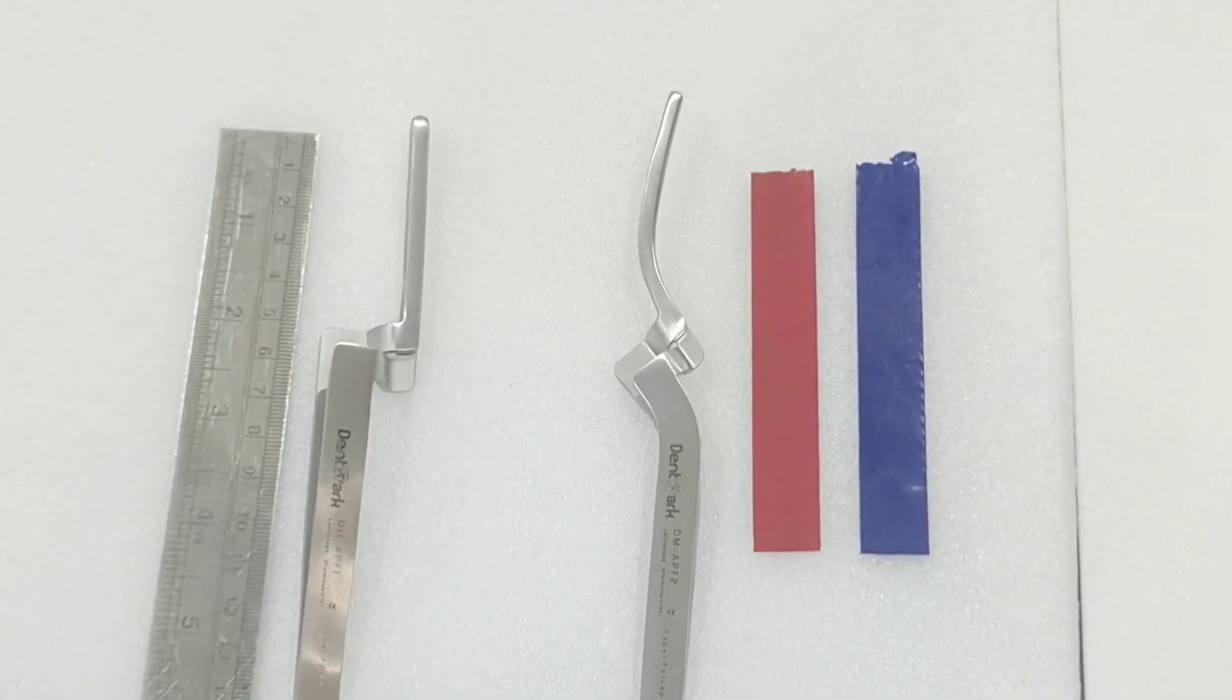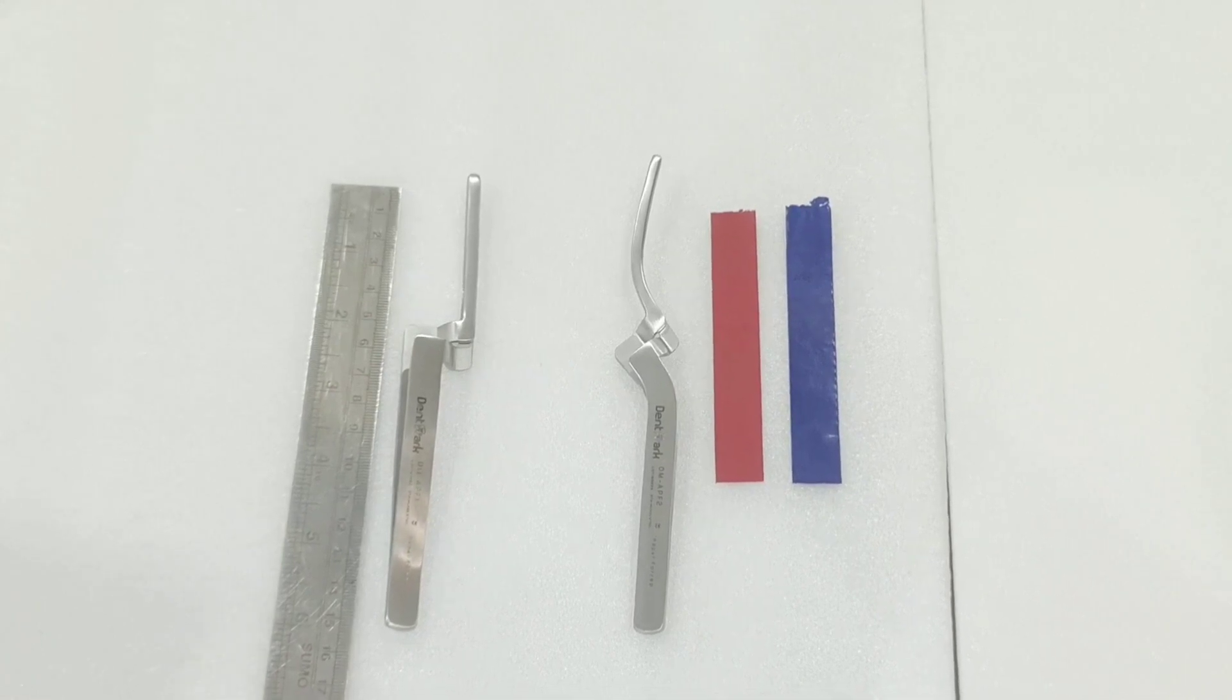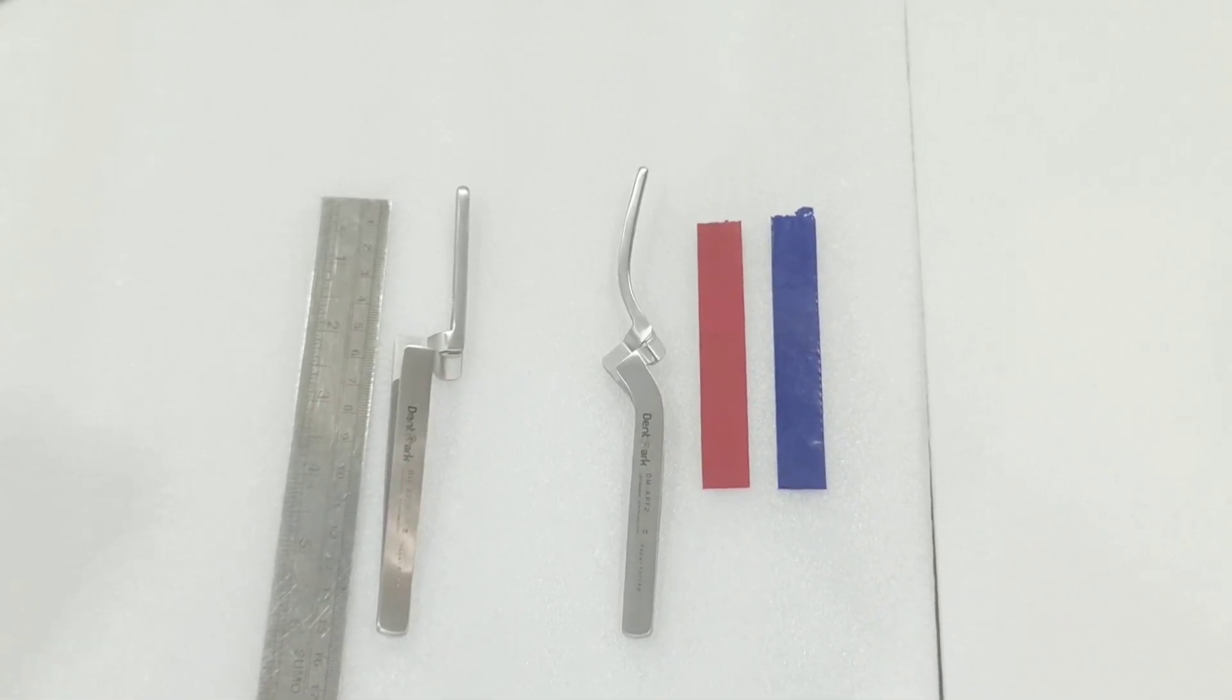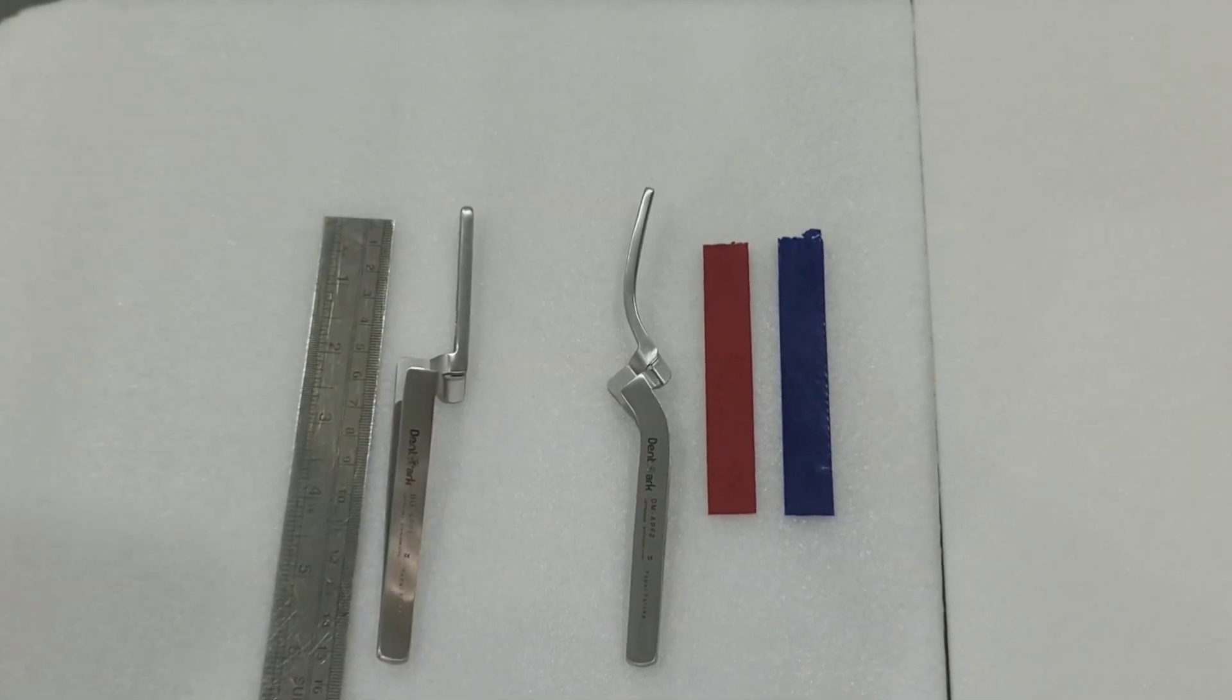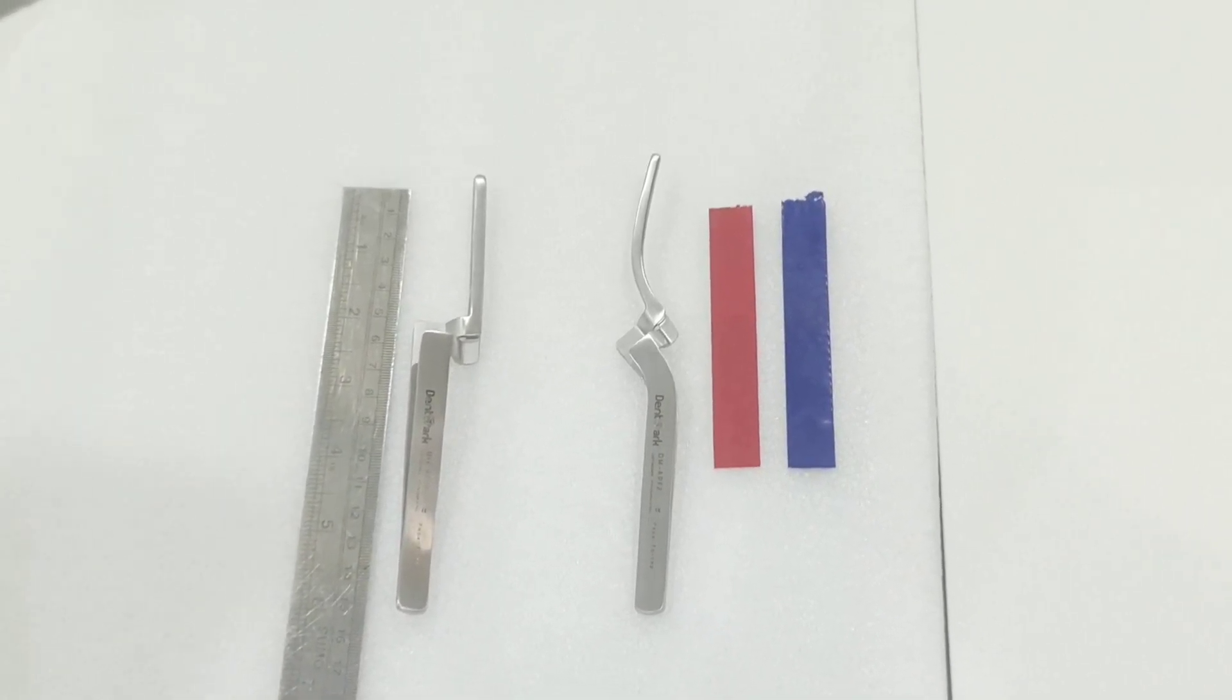This is another video from Denmark High Quality Dental Instruments. This is an articulating paper holder or forceps, used for checking occlusion of dental restoration and teeth. Holding the paper with an instrument rather than fingers assures better results.